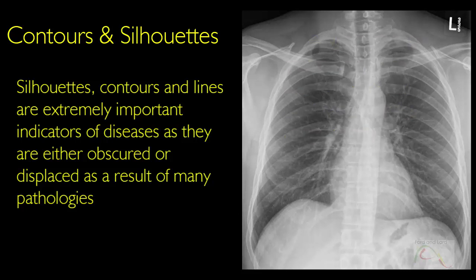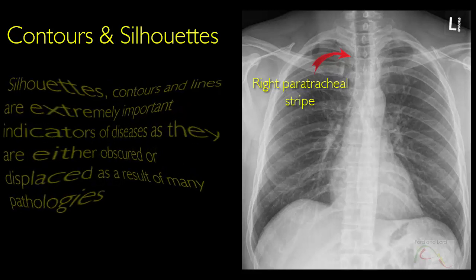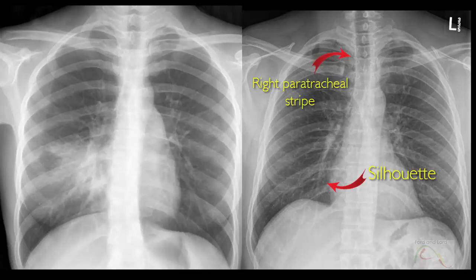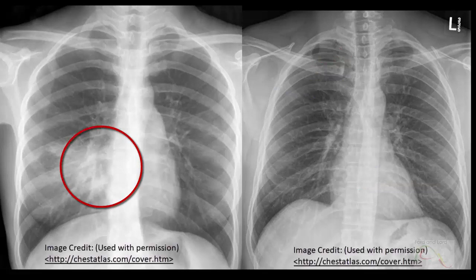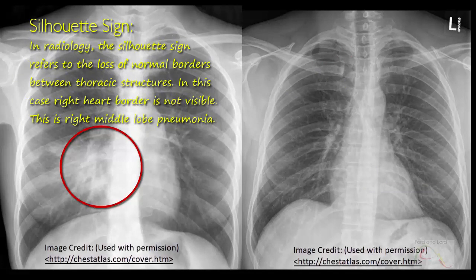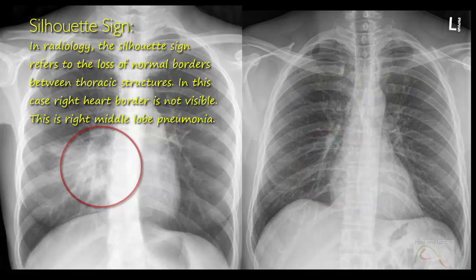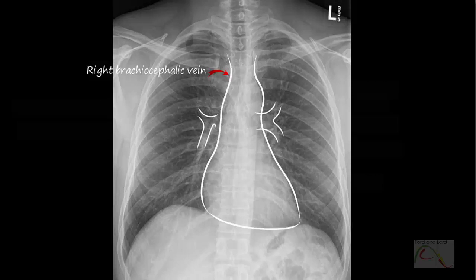Soft tissue and lung interfaces are seen as either lines or stripes — for example, the right paratracheal stripe — or as a silhouette, such as that found between the right atrium and the right middle lobe of the right lung. By definition, the word silhouette means a dark shape seen against a light surface. Loss of these interfaces indicates the presence of lung pathology. For example, loss of the interface between the right heart border and the lung may represent right middle lobe pneumonia. These silhouettes and lines are extremely important indicators of disease, as they are either obscured or displaced as a result of many pathologies. Consolidation in the right middle lobe has obscured the right heart border — this is right middle lobe pneumonia. You should know these contours by heart.